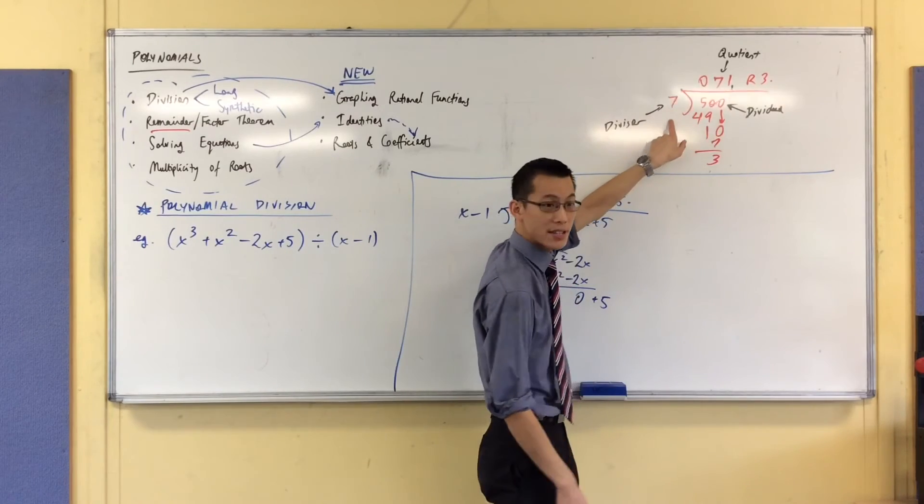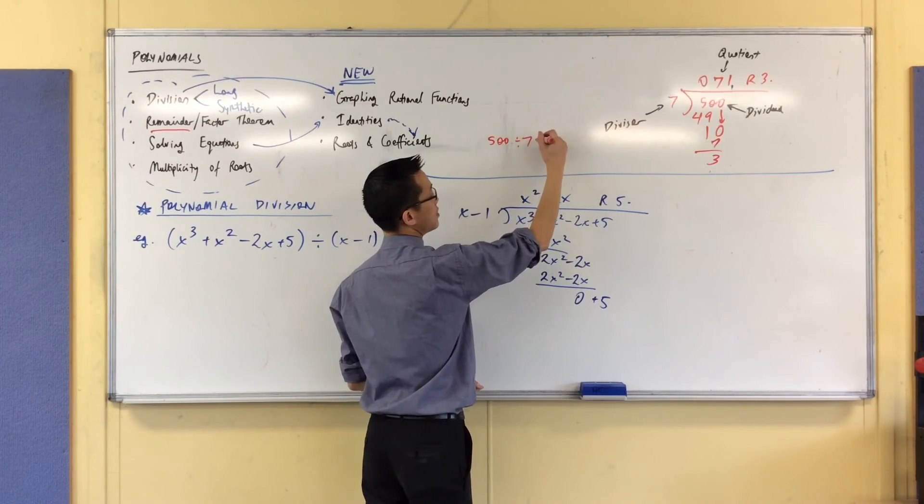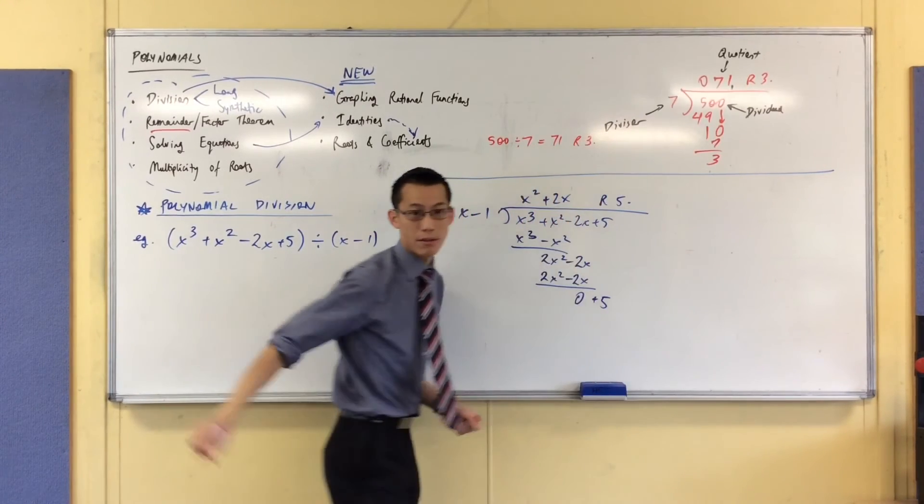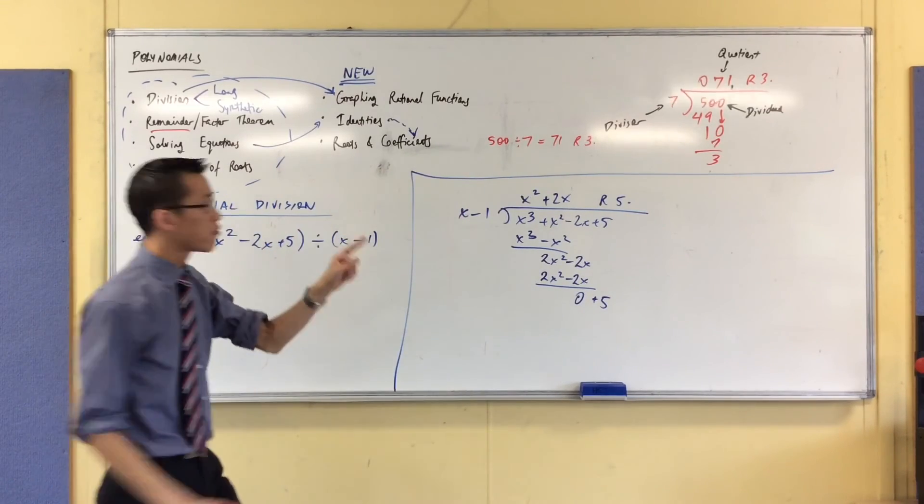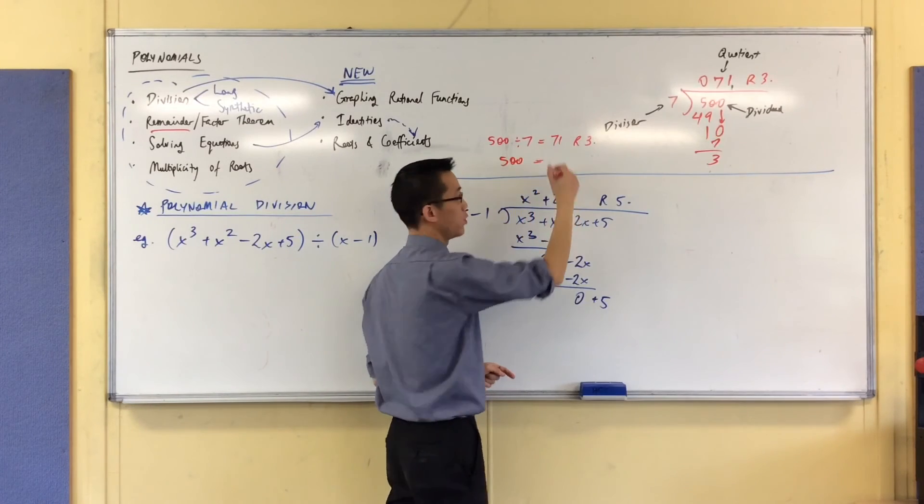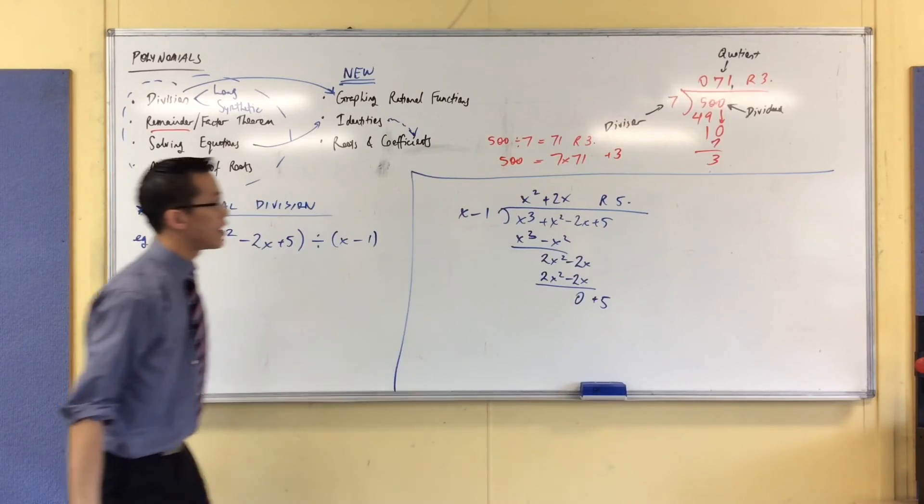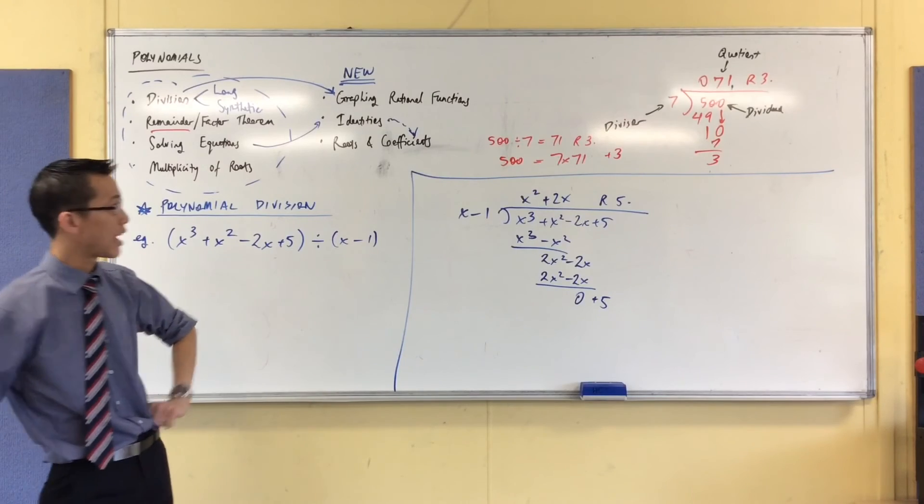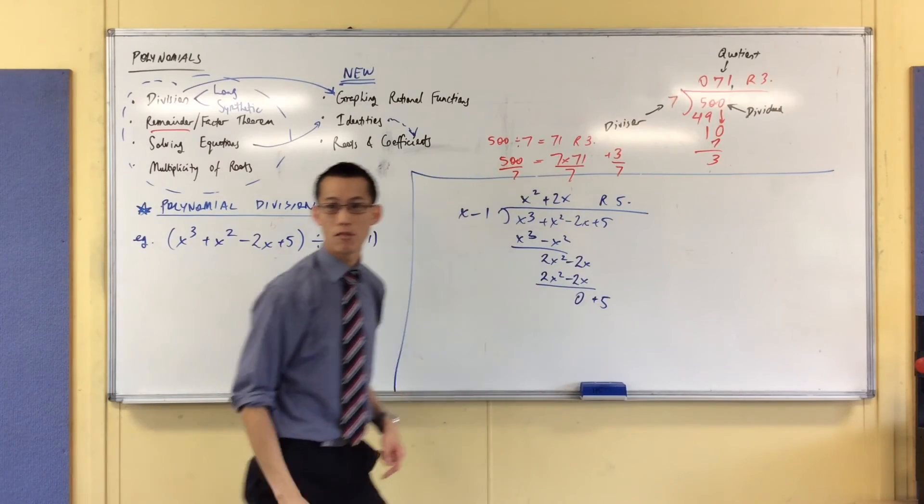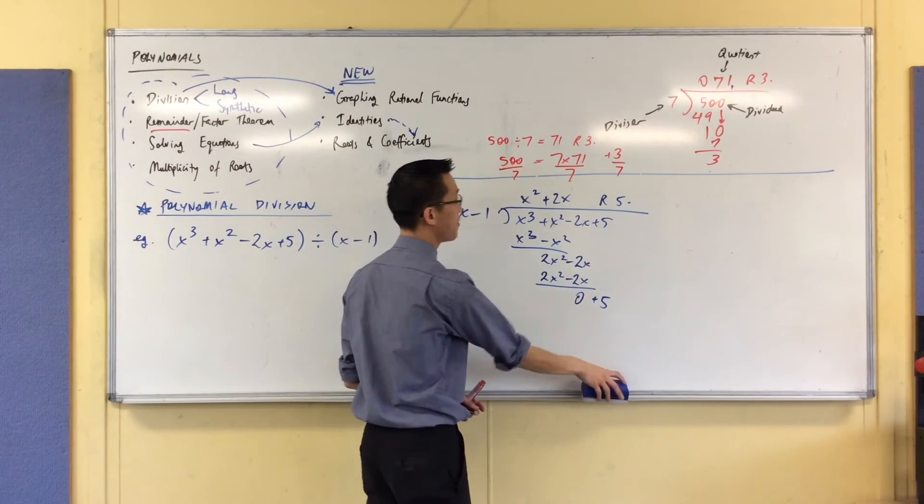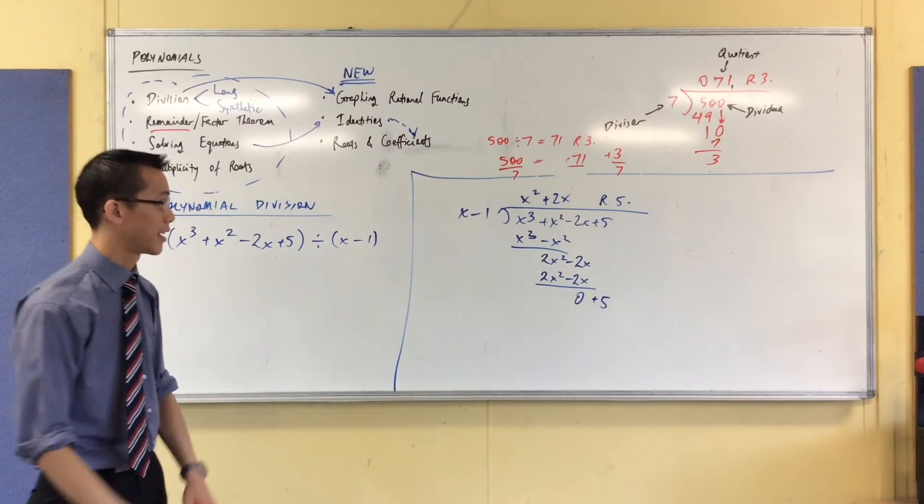If 500 divided by 7 is 71, remainder 3, so I'm going to say 500 divided by 7 is 71, remainder 3. What I can do is I can say, hold on a second, I can write 500 as equal to 7 lots of 71 plus that remainder. Which, by the way, is also how you arrive at mixed numerals. If I go back a step, if I write this as on 7, on 7, on 7. That's how I know that 500 divided by 7 is 71 and 3 sevenths. That's how we connect those two ideas together.